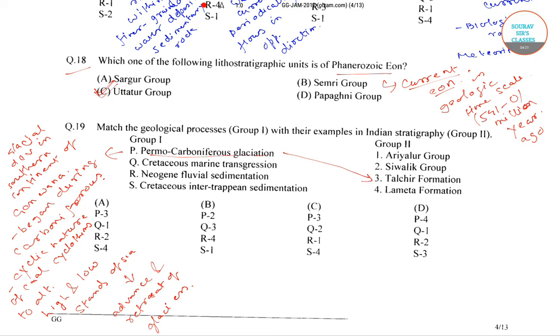Next is Cretaceous Marine Transgression. Marine Transgression is a geologic event during which sea level rises relative to the land, and the shoreline moves towards the higher ground.